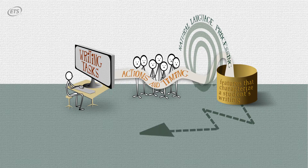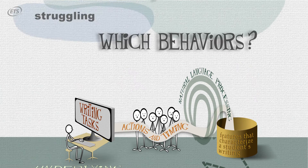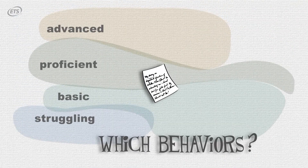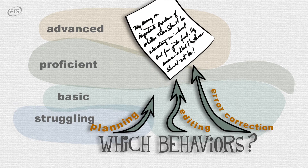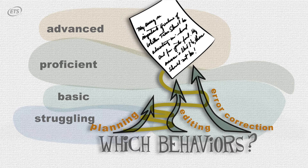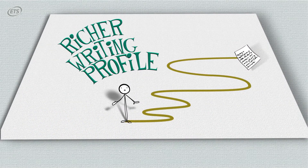We can also identify the word types and their linguistic complexity. We can then use those features that characterize a student's writing to infer the underlying cognitive processes a student engages during composition. We want to find the kinds of behaviors that positively relate to the final product. We also think that the process information gives us something new — it unpacks how you get there.